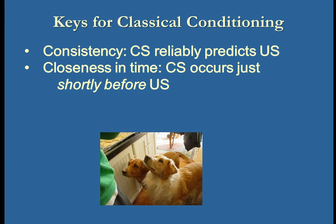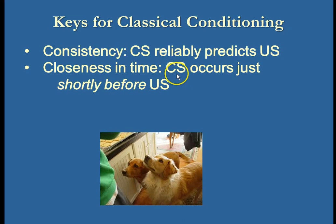There are two key things that need to happen for classical conditioning to occur. First, the conditioned stimulus — like the sound of that cheese drawer — needs to reliably predict the unconditioned stimulus. There needs to be consistency. Second, there needs to be closeness in time. If I opened the cheese drawer and then three hours later grated cheese, the sound of that drawer really wouldn't have much meaning. The CS needs to occur just shortly before the US, and it needs to occur before — because it needs to predict that the US is about to happen. If it occurs afterwards, it's meaningless.